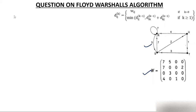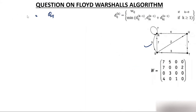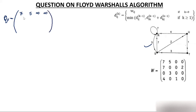I will first make Q0 matrix, which is not part of those 4 matrices — it is actually the image of the weighted matrix W. In Q0 matrix, where there is a weight you write that weight, but where there is a zero you write infinity. So: 7, infinity, infinity, 2, then infinity, 3, infinity, infinity, 4, infinity, 1, and infinity. This is what the Q0 matrix is all about.